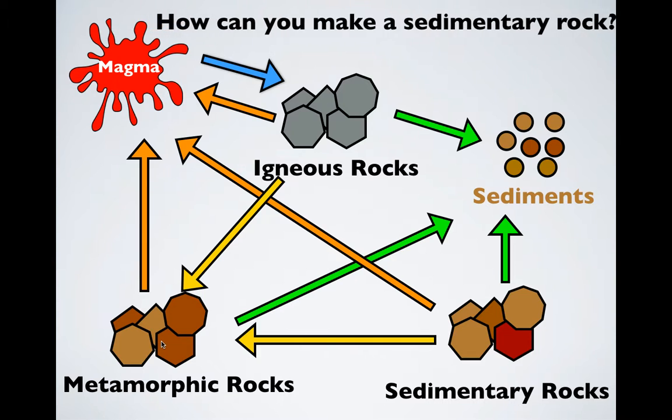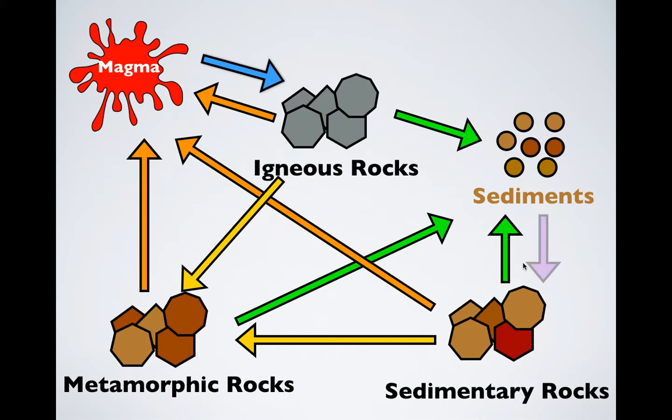Then how do you make sedimentary rock? Well, you cement sediments together to make sedimentary rock. So to make igneous rock, there's only one process. To make sedimentary rock, there's only one process. And then to make metamorphic rock, there are two possibilities here. But remember, we can always go back to our starting materials by taking these and breaking them apart or by melting them.